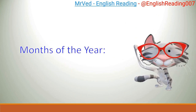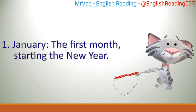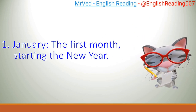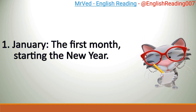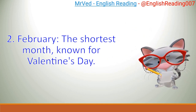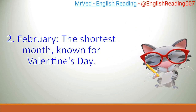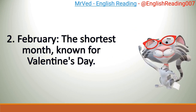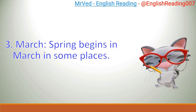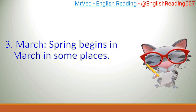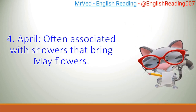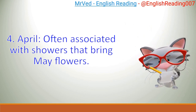Months of the Year. 1. January, the first month, starting the new year. 2. February, the shortest month, known for Valentine's Day. 3. March — spring begins in March in some places. 4. April, often associated with showers that bring May flowers.